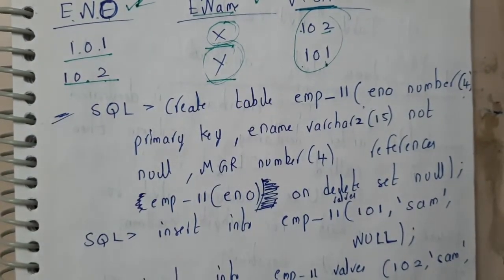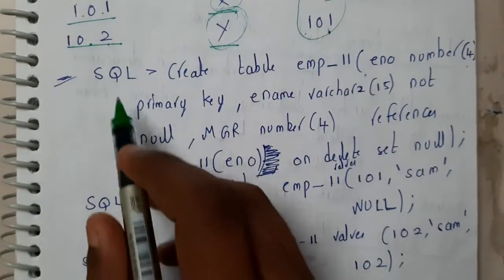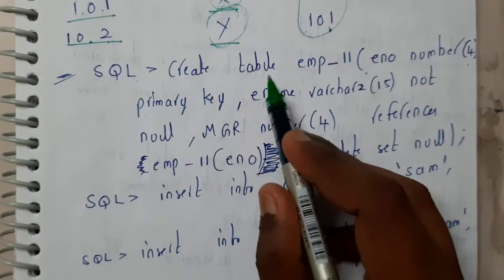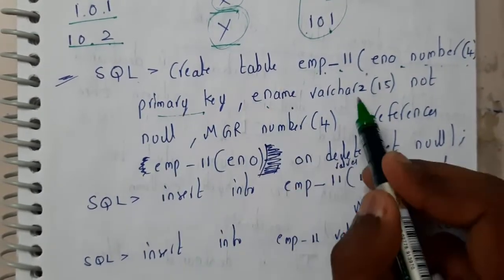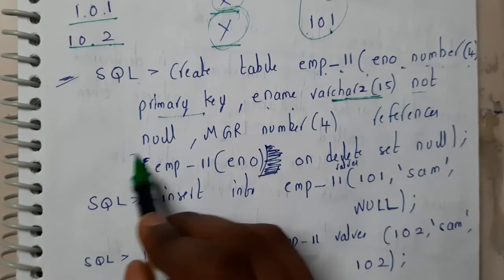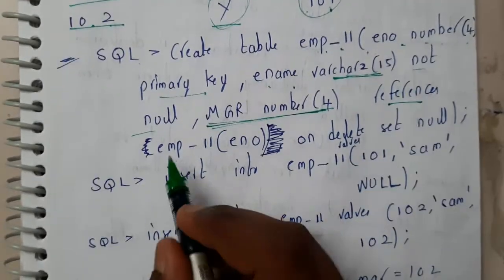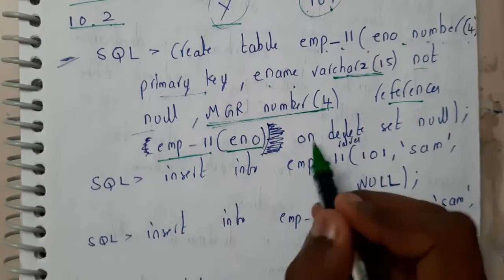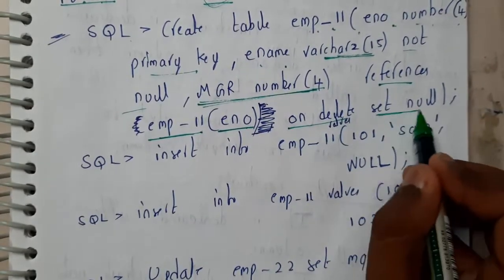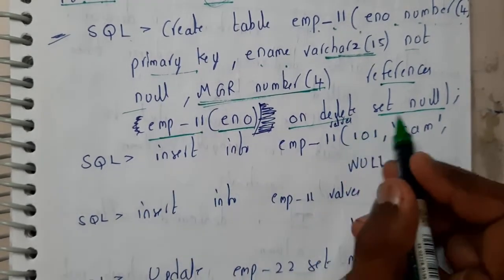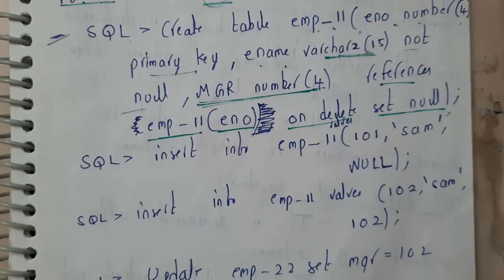So this will be a lab program for you. Basically the SQL is: CREATE TABLE employee11 with employee_number as primary key, employee_name as VARCHAR NOT NULL, and mgr_id which REFERENCES employee11(e_number). We are using ON DELETE SET NULL — if you delete the parent record, the child record's manager ID will become null.